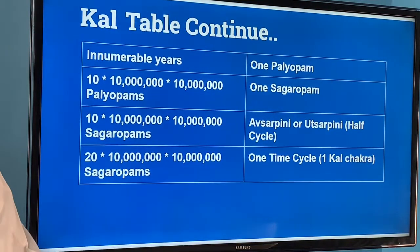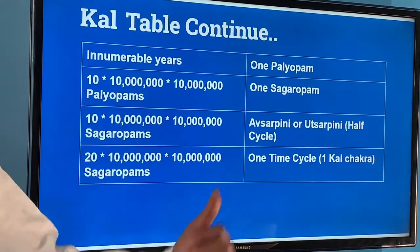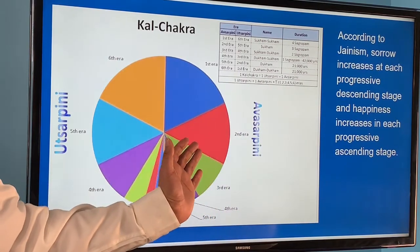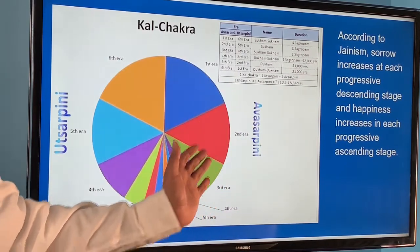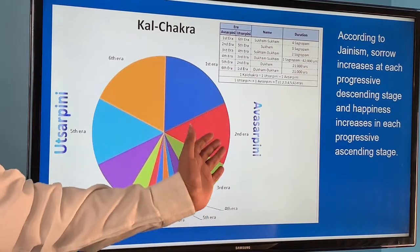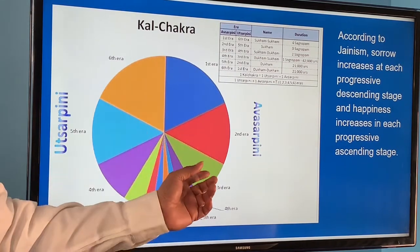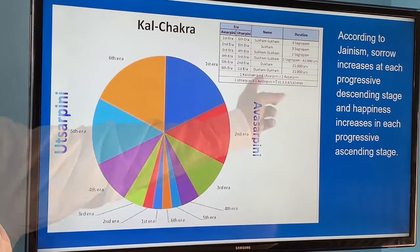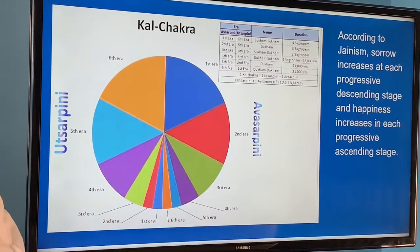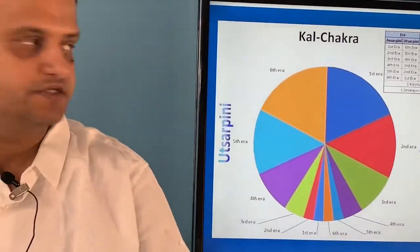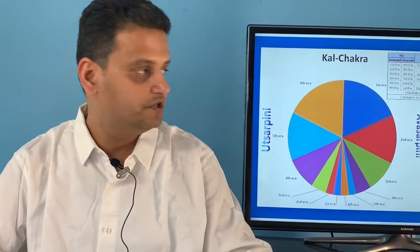According to Jainism, sorrow increases during the progressive descending stage and decreases during the ascending stage. Currently we are in the fifth era, and we can see in the world that people are not as happy or fulfilled as they used to be in earlier times.